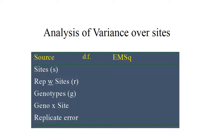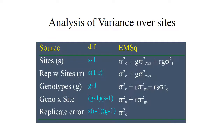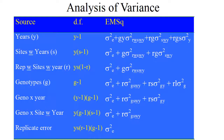A table is given for analysis of variance over sites. The components include sites, replication versus sites, genotype, genotype-by-site interaction and replication error. An ANOVA for over years, over sites and other factors is also given.